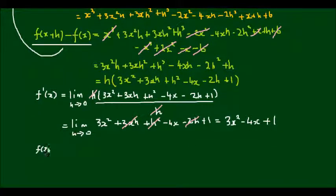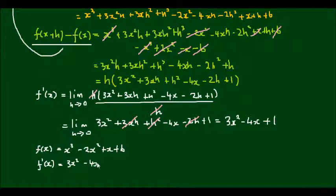So f of x is equal to x cubed minus 2x squared plus x plus 6. And if we compare that to our derivative, we get 3x squared minus 4x plus 1.